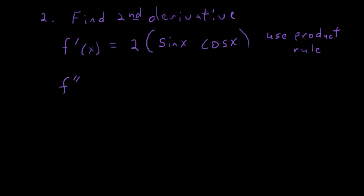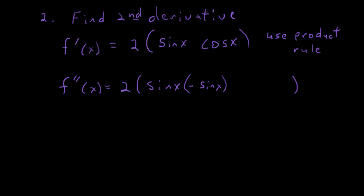The second derivative, f double prime of x, equals 2 times — applying the product rule inside the parentheses: the first factor, sine of x, times the derivative of the second factor. The derivative of cosine x is negative sine x. Plus the second factor, cosine x, times the derivative of the first factor, which is cosine x.